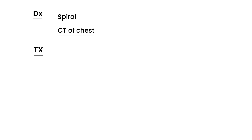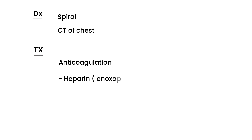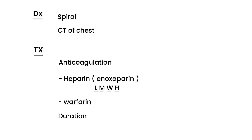The treatment of DVT is essentially anticoagulation — giving anticoagulants with the hope that they'll break those clots so they no longer develop into emboli and travel up the circulation. Initially you give heparin products, usually enoxaparin, which is a very commonly used low molecular weight heparin. That is then followed by warfarin.